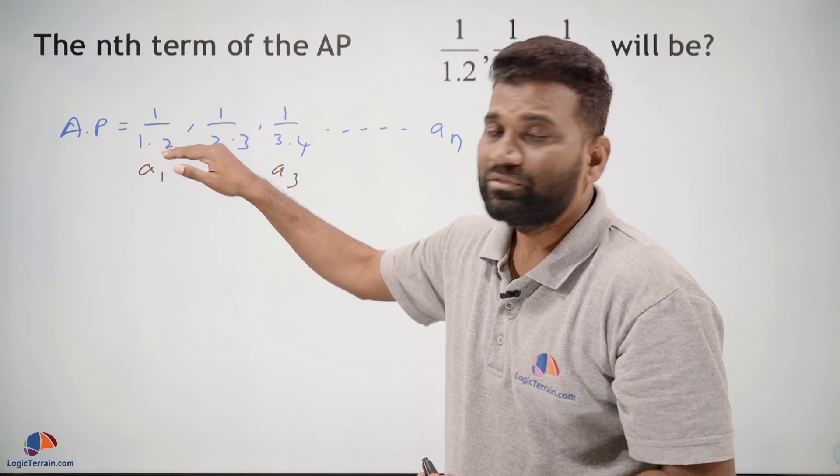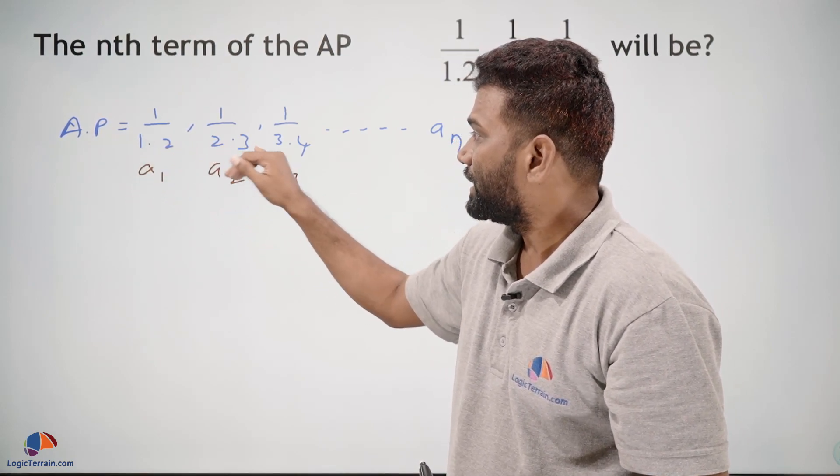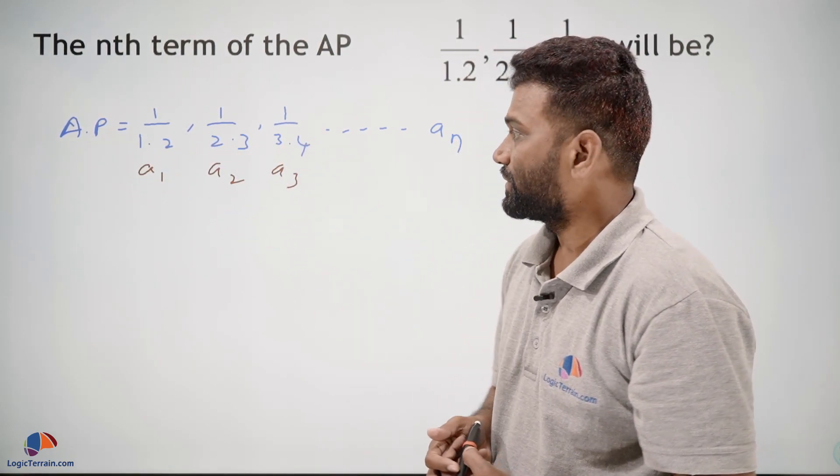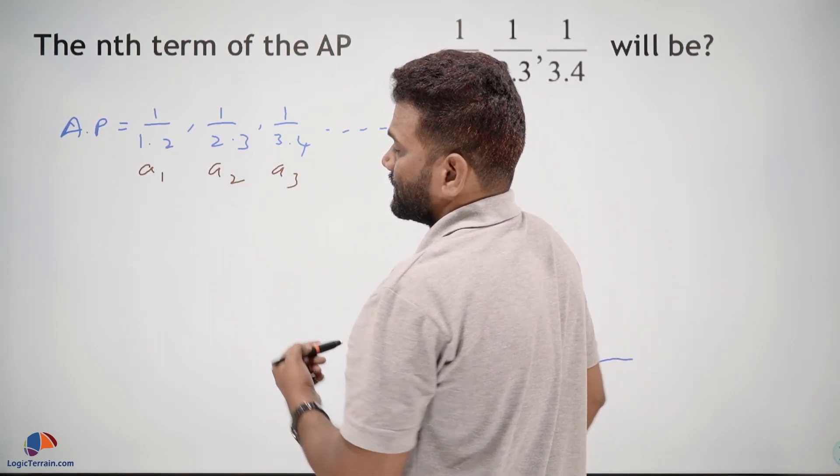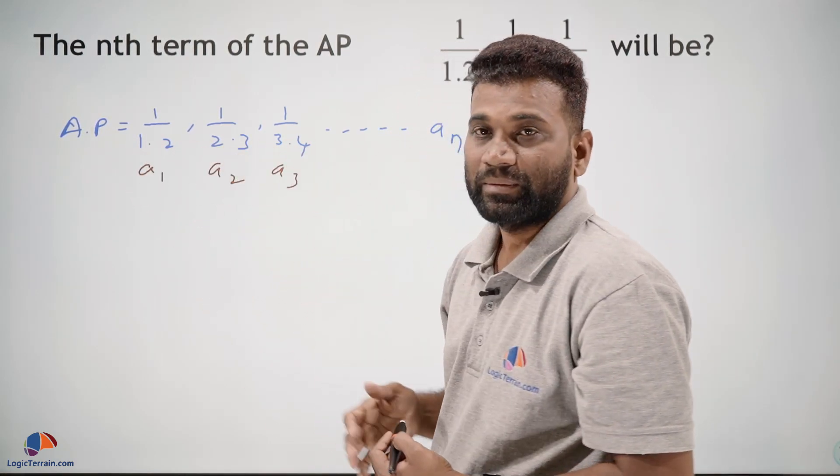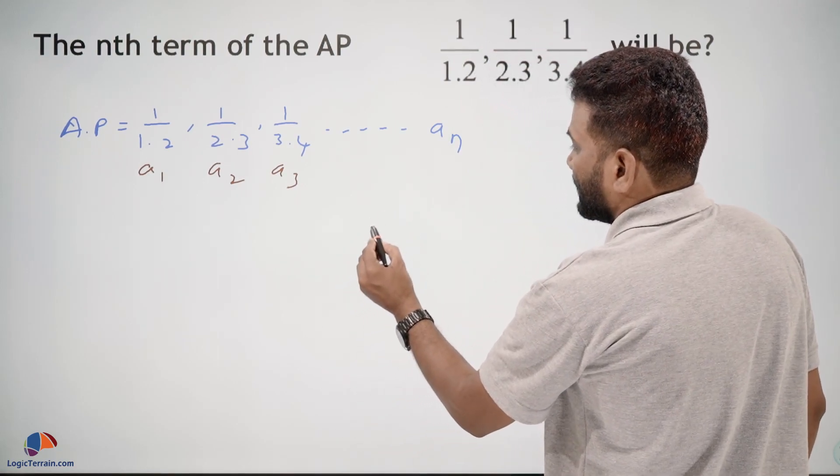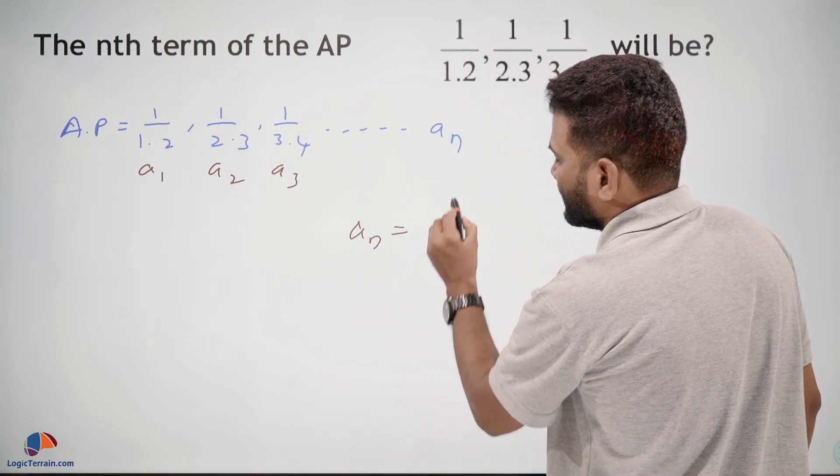It is a product of two factors: 1 into 2, 2 into 3, 3 into 4, and so on. So the first factor series, if you observe: 1, 2, 3, and so on. So that nth term a_n equals 1 upon—what will you get? If it is the 10th term you will get 10, if it is the 100th you...